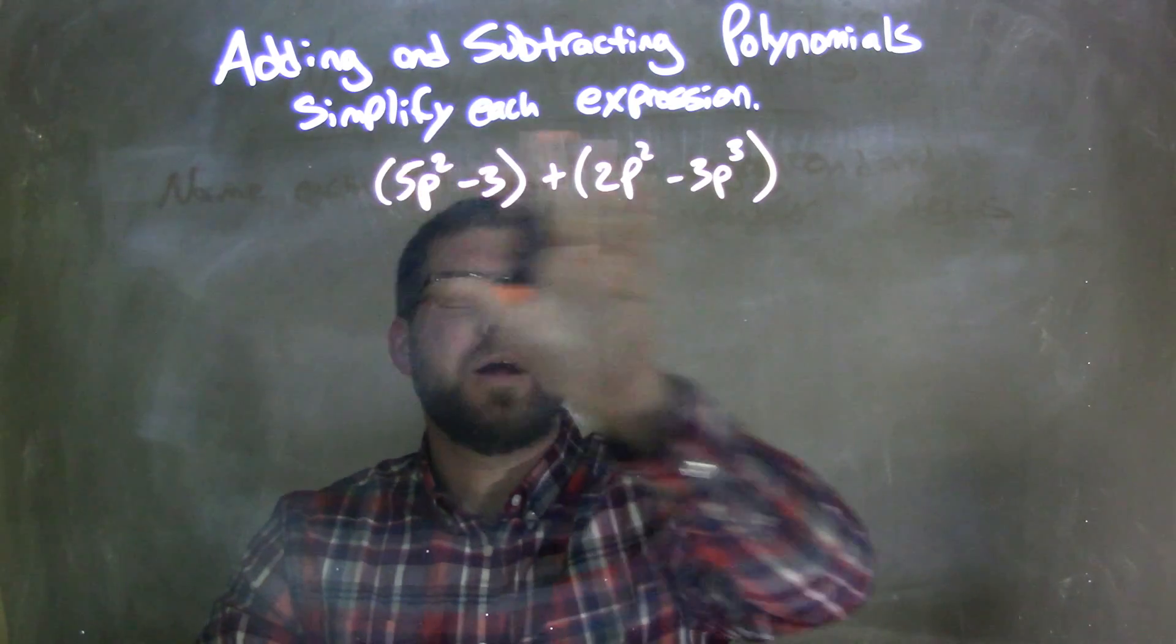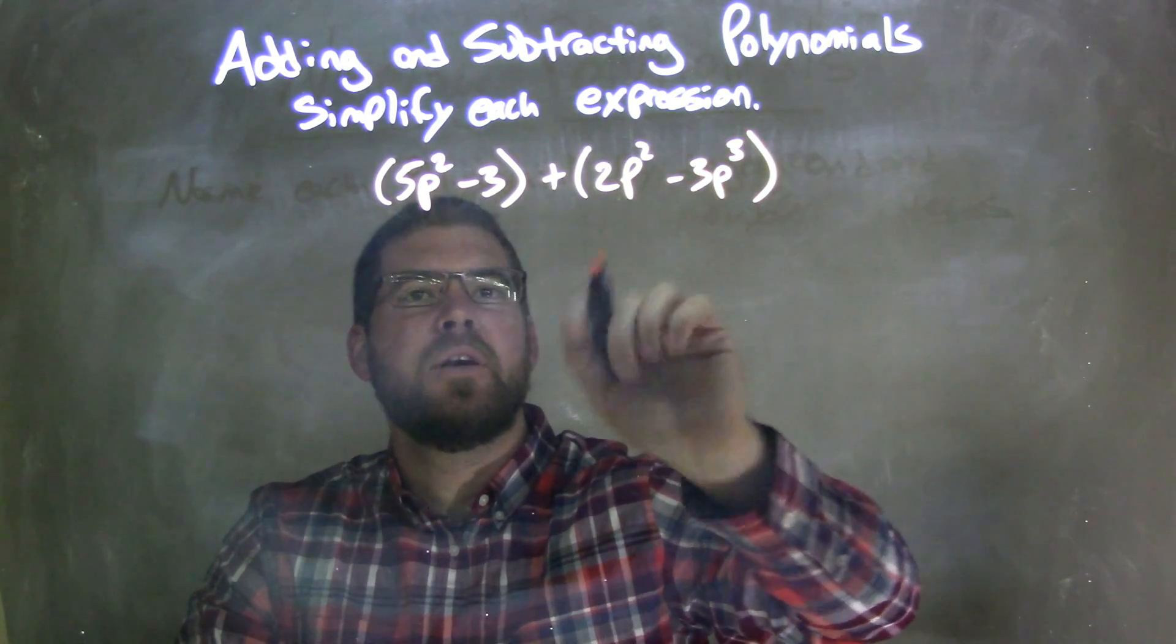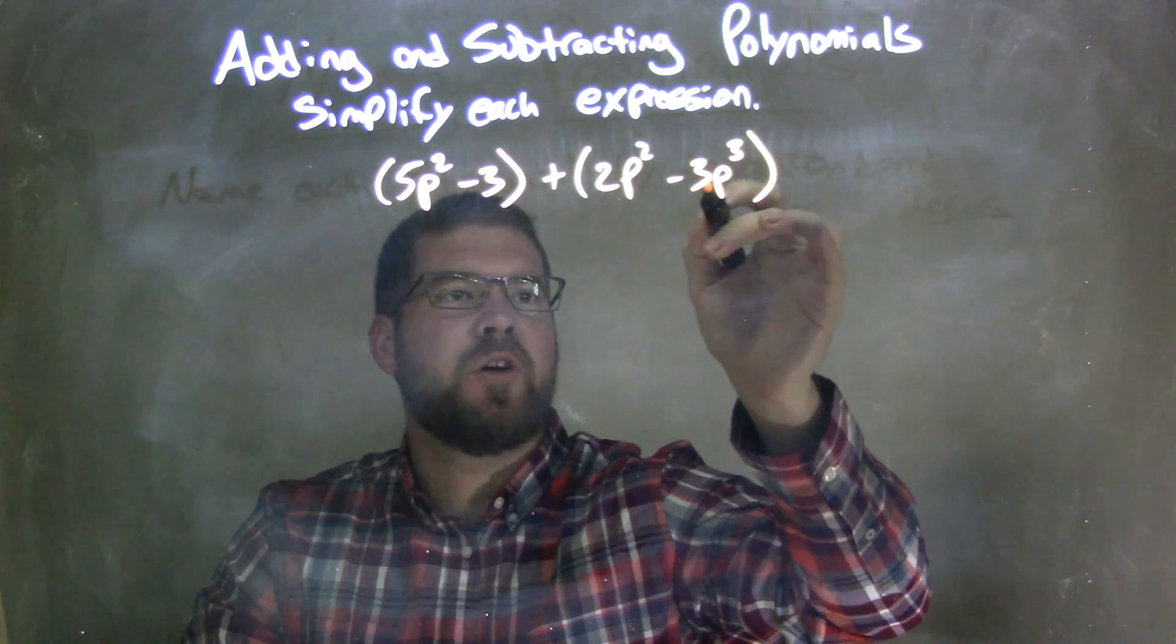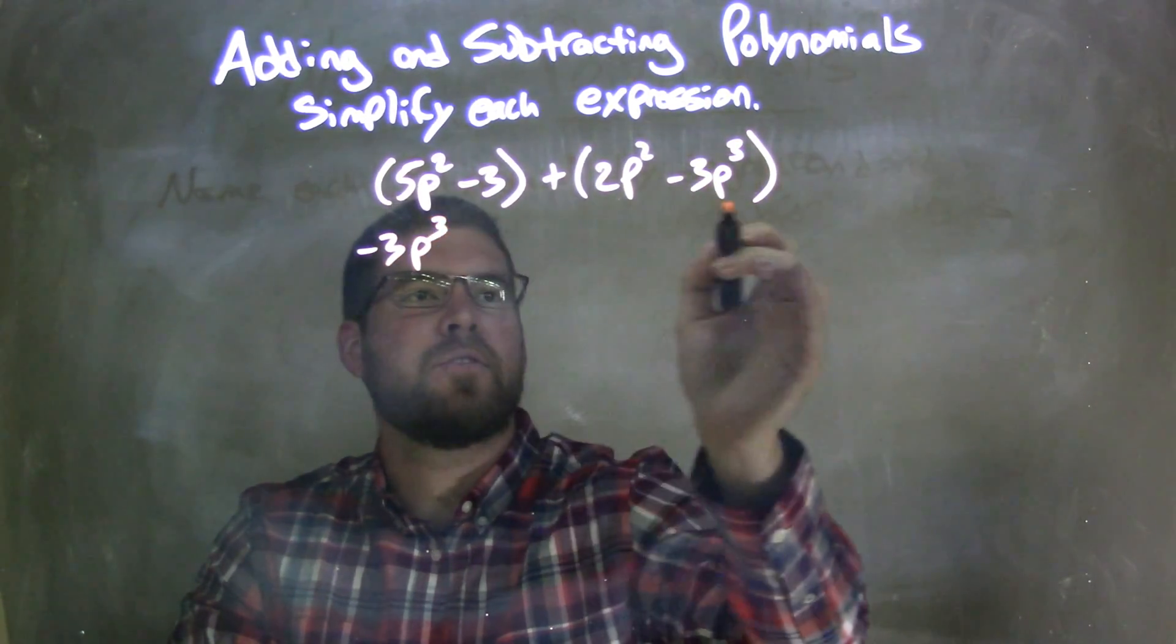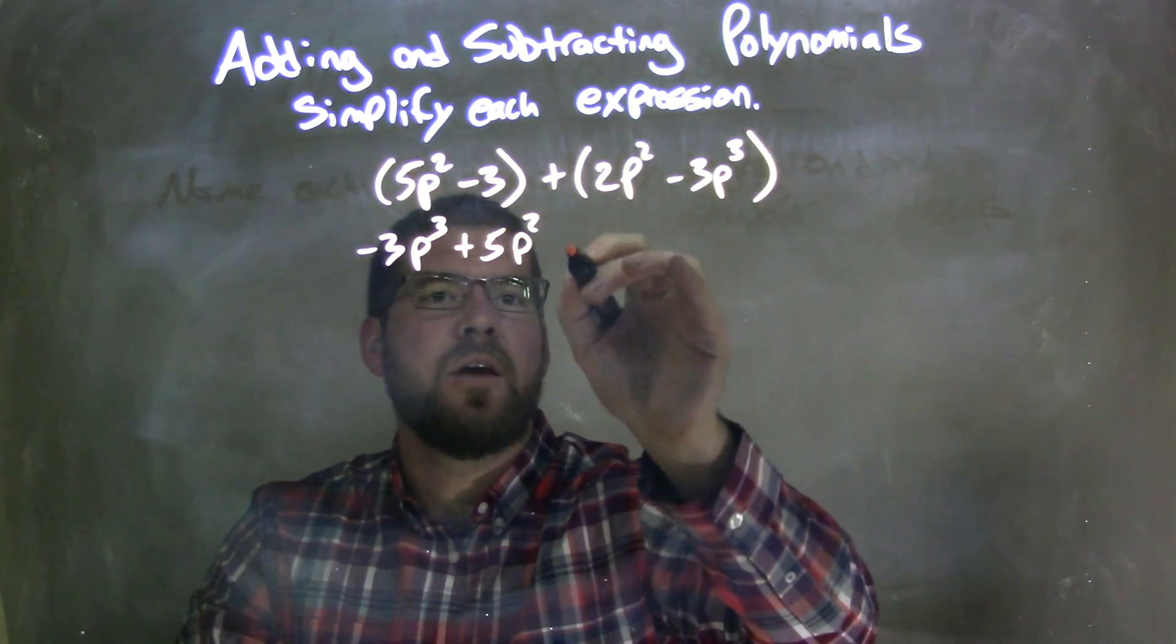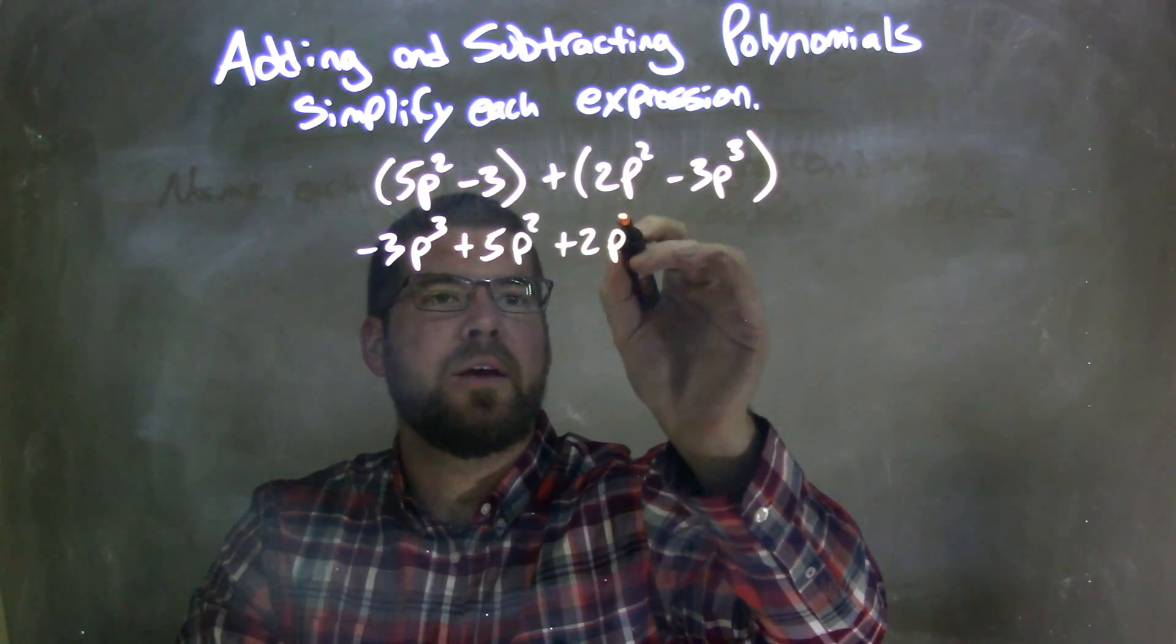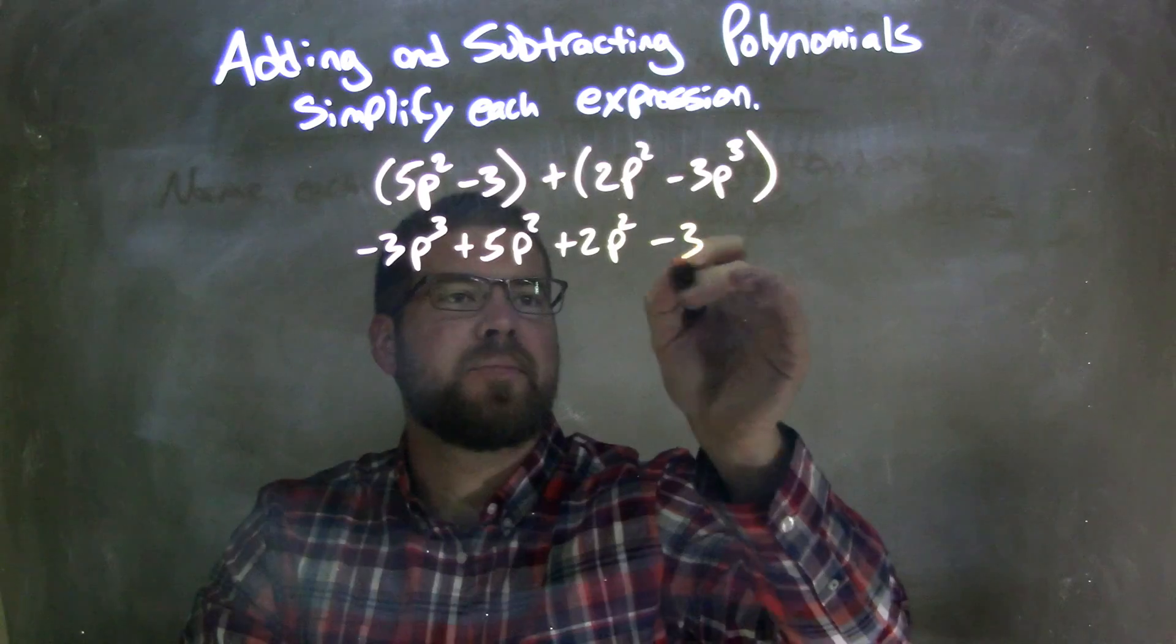Now I'm going to rearrange this from our highest degree terms to our lowest degree terms. So our highest degree term is 3p to the third. So I'm going to put a negative 3p to the third first. Then I'm going to put a 5p squared. Then we're adding a 2p squared. And don't forget, then minus 3.